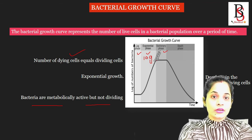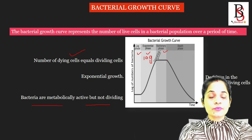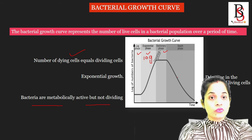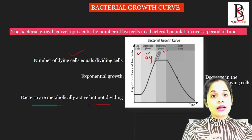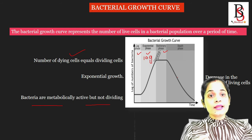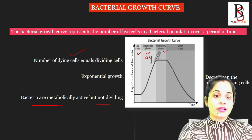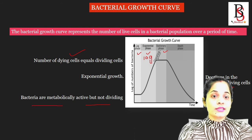In the stationary phase, a flat line is found which is parallel to the x-axis. Just after the stationary phase, the death rate of bacteria increases because of lack of nutrients, lack of space, and more toxins produced. An important point here is that in the standard bacterial growth curve, the bacteria use only one carbon source.